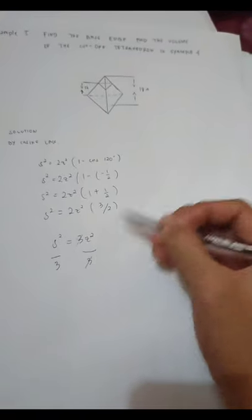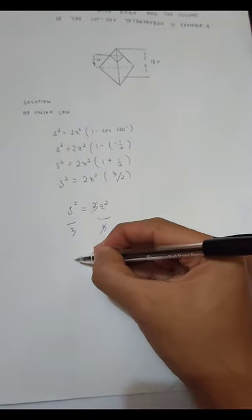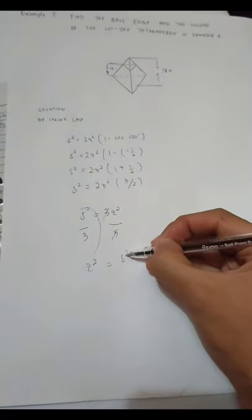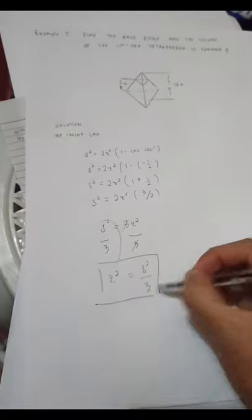Cancel both 3's. We have Z squared equals to this one, S squared over 3. So, ang final answer natin is this one.